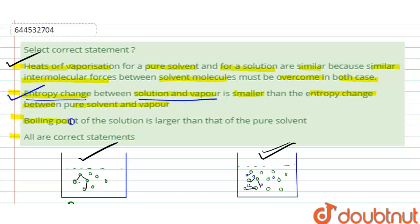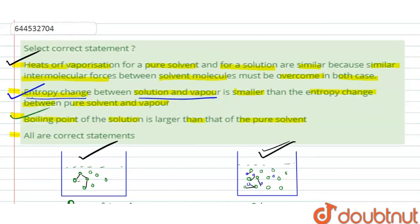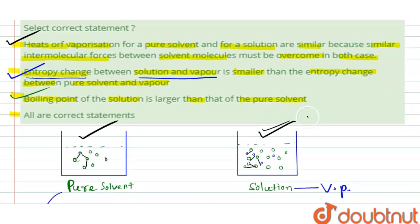The next statement says: the boiling point of the solution is larger than that of the pure solvent. Yes, this is also correct. Because there are slightly more intermolecular forces in solution, we have to apply slightly more temperature than for the pure solvent to break the bonds between molecules. Hence the boiling point of the solution is slightly larger than that of the pure solvent.